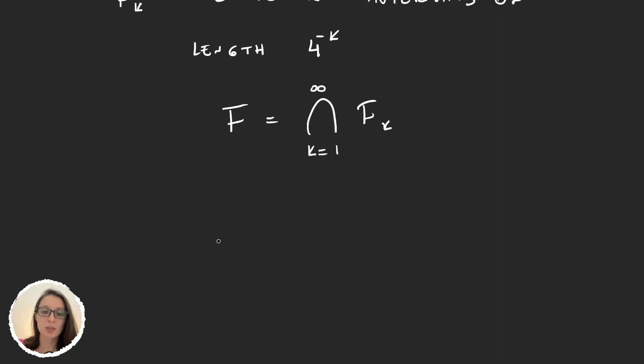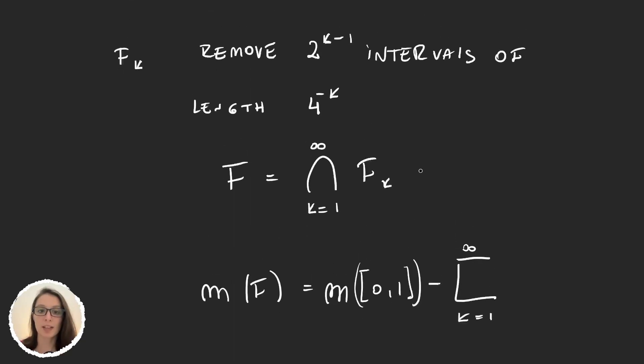And so with this, we can calculate the measure of F. And it's going to be the measure of [0,1] minus the measure of everything we have removed. And the measure of the things we removed is how many we removed times their length. So we will have on each step a sum from k = 1 to ∞ of—well, we said that on each step we removed 2^(k-1) times 4^(-k), because that's the length of each of the intervals we removed. So I'm going to write this as 4^(-k) = 2^(-2k), and this is obviously 1/2^(2k).